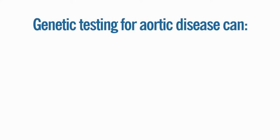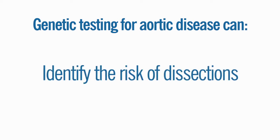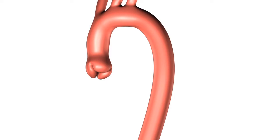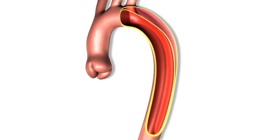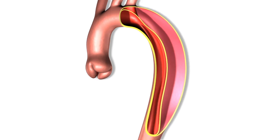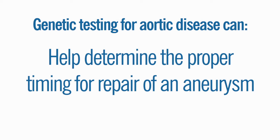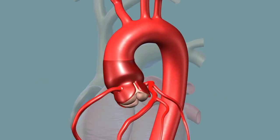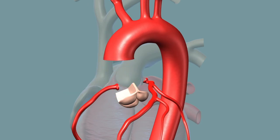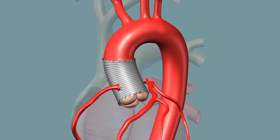In addition, genetic testing can help identify people who may be more likely to have aortic disease. Genetic testing for individuals with aortic disease can identify those at higher risk for dissection — a tear that develops in the inner layers of the blood vessels at smaller sizes. This is why surgery in people with hereditary aortic disease is considered at a smaller size. Genetic testing can also help determine the proper timing for repair of an aneurysm, as people with hereditary aortic disease usually need surgery at an earlier stage.